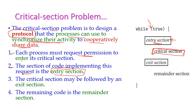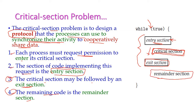Any process that wants to execute the critical section must satisfy the entry section — only then will it be allowed to enter. The critical section may be followed by an exit section; after completing the critical section the process goes to the exit section. The remaining code — that which is not in the entry section, critical section, or exit section — is called the remainder section. Code in the remainder section does not affect other processes.